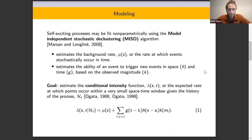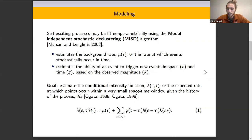Then we can estimate the ability of each event to trigger new events in space, denoted H, and in time, denoted G, and both of these will have some sort of dependence on the magnitude K.